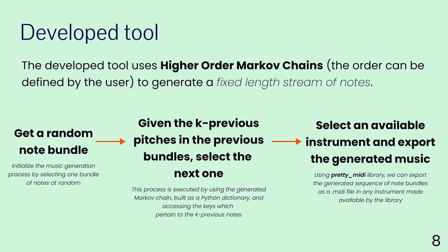To actually generate the music, we first get a random note bundle from the full list of note bundles. Then, given the K previous bundles, we select the next bundle and add it to the generated chain, leveraging the Markov chain we built. We traverse this chain for however long we decide, then export the generated sequence using the pretty_midi library. By selecting a given instrument available in this library, we export the sequence of notes into a MIDI file.